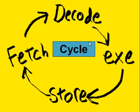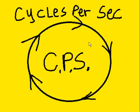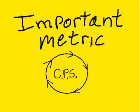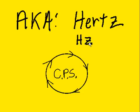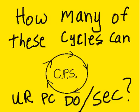This is called a cycle. An expression developed in the industry: cycles per second. It's an important metric. It's also known as Hertz and it can be written Hz. How many of these cycles can your PC do per second? Cycles per second.